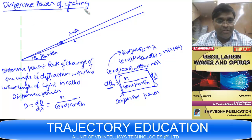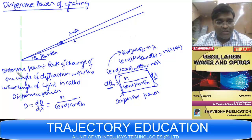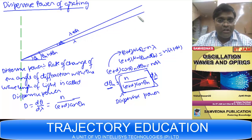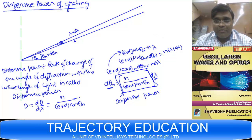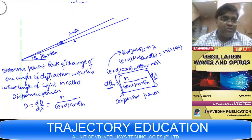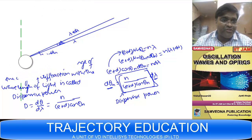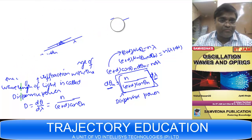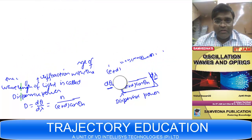Now we move to the next topic — resolving power. There is a lot of confusion between dispersive power and resolving power. Dispersive power is simply the forming of different fringes for different wavelengths. Now, what is resolution?